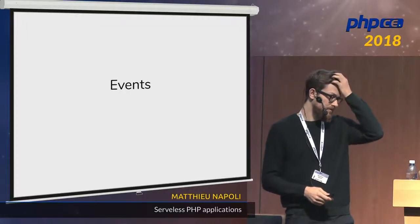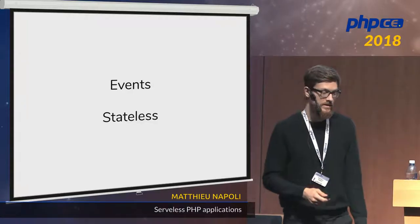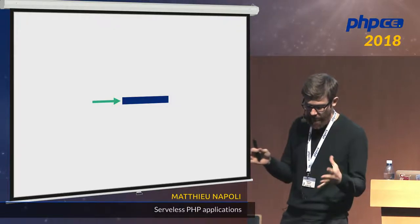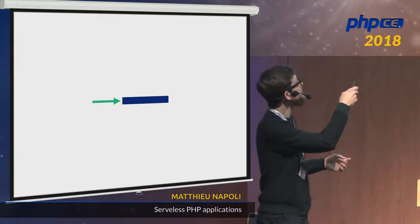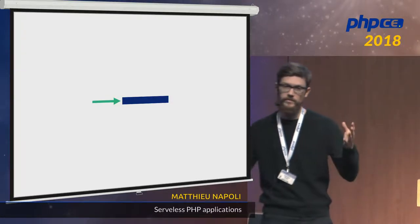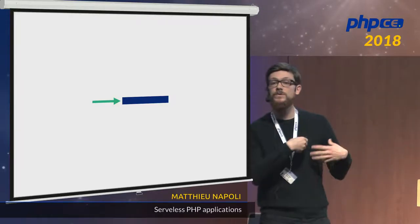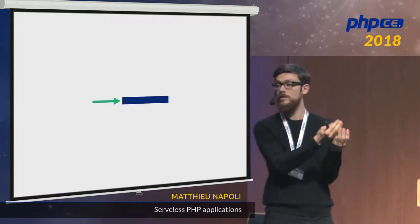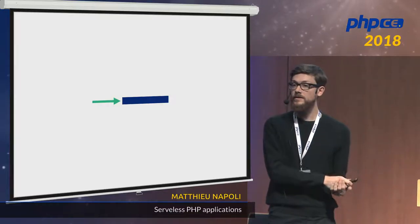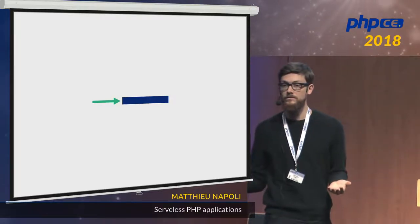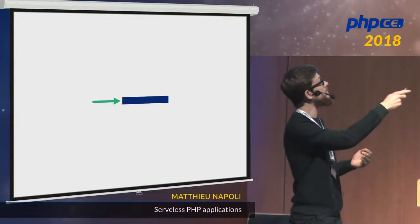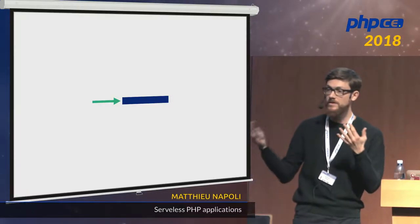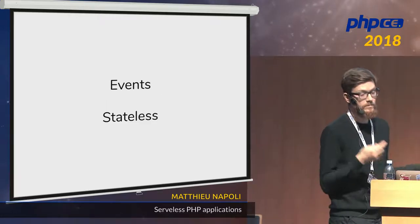The second big difference is that this is stateless, and this is really important. What really happens when a request comes in? Amazon will boot a Linux container — not Docker, but very similar. It will boot a container, boot our code inside of it, the code gets executed, handles the HTTP request, and then stops. Everything stops. The next time an HTTP request comes in, the whole thing runs again. There is no shared memory, no shared state between executions. This is why it's stateless.